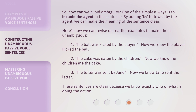So, how can we avoid ambiguity? One of the simplest ways is to include the agent in the sentence. By adding 'by' followed by the agent, we can make the meaning of the sentence clear. Here's how we can revise our earlier examples to make them unambiguous. One: 'The ball was kicked by the player.' Now we know the player kicked the ball. Two: 'The cake was eaten by the children.' Now we know the children ate the cake. Three: 'The letter was sent by Jane.' Now we know Jane sent the letter. These sentences are clear because we know exactly who or what is doing the action.